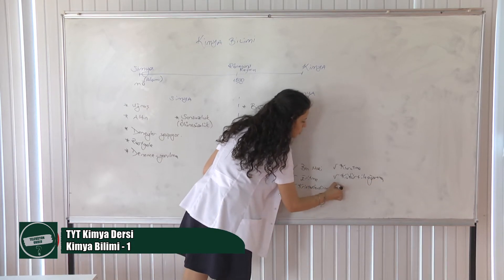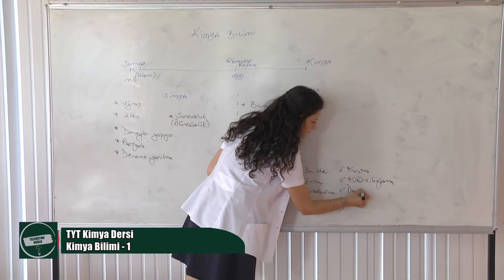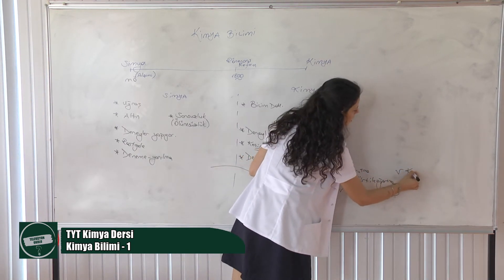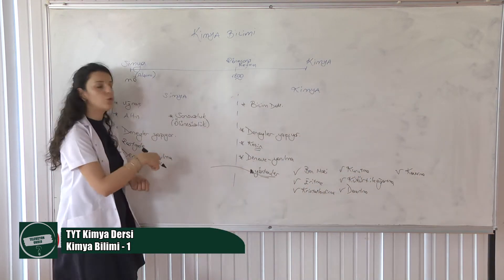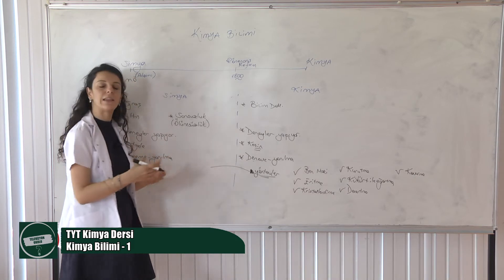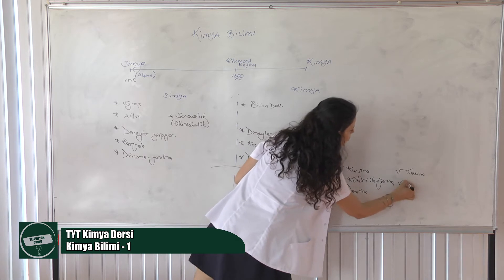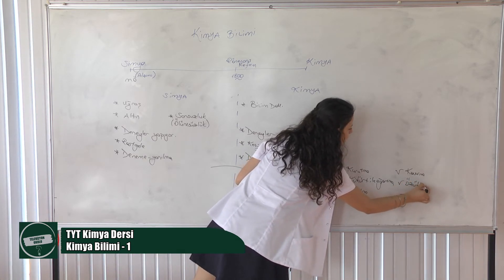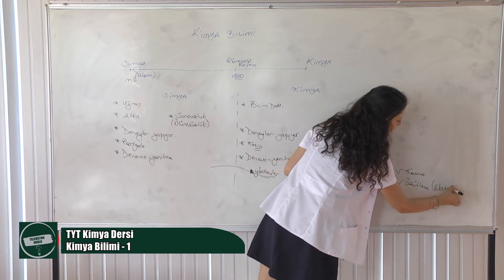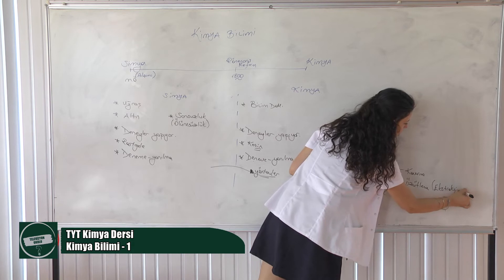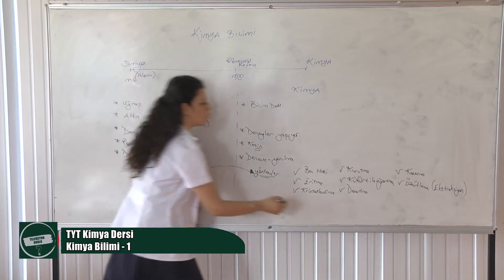Sonra damıtma. Kavurma — tabii ki bildiğimiz yemek kavurması değil; çeşitli maddeleri karıştırıp ısıyla açığa çıkan yağları ve özütleri elde ediyoruz. Bir diğer yöntem özütleme, yani ekstraksiyon. Eskiden beri maddelerin özütleri çıkarılıp çeşitli şifa yöntemlerinde kullanılmaya çalışılmış. Bunun gibi daha birçok yöntem simyadan kimyaya kazandırılmış.